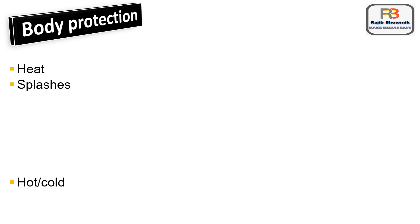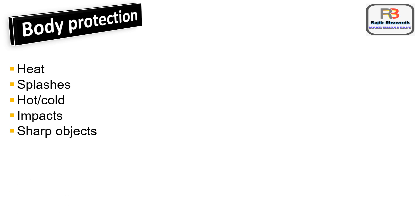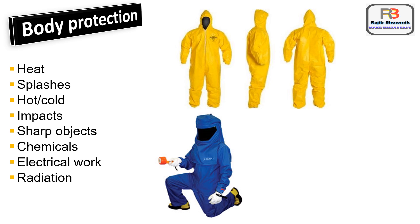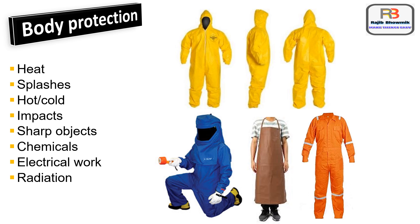Body protection is needed when work becomes a potential cause for contamination or injury to other parts of the body such as legs, arms, back, chest, etc. Hazards include heat, splashes, hot and cold metals and liquids, impact, sharp objects, chemicals, electrical work, and radiation. Various types of safety aprons or industrial boiler suits are used to avoid contamination or injury, as shown in the picture.